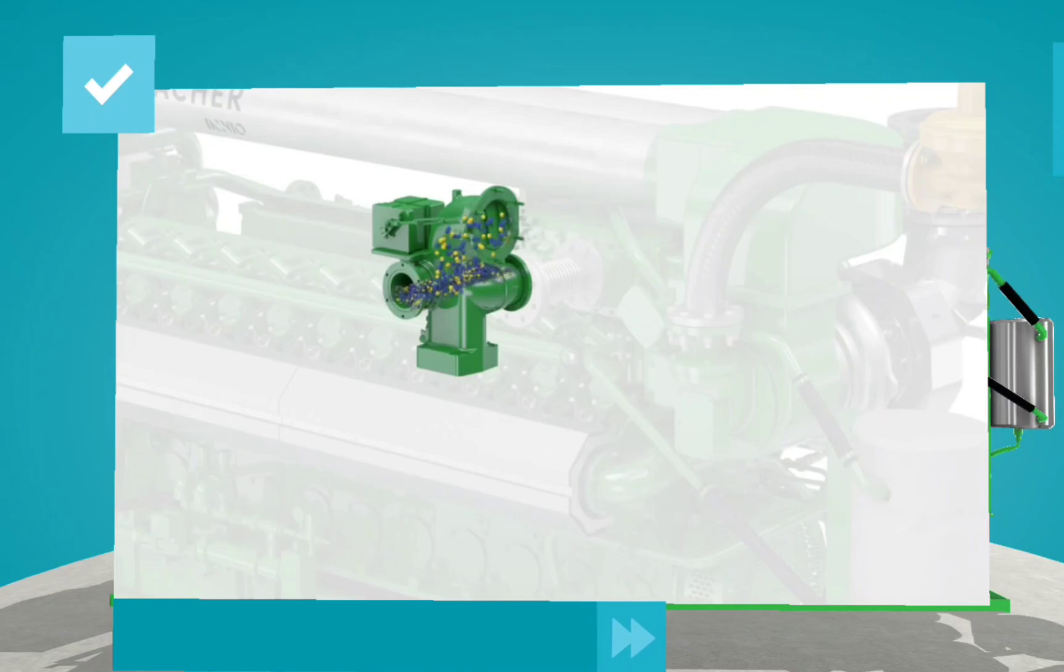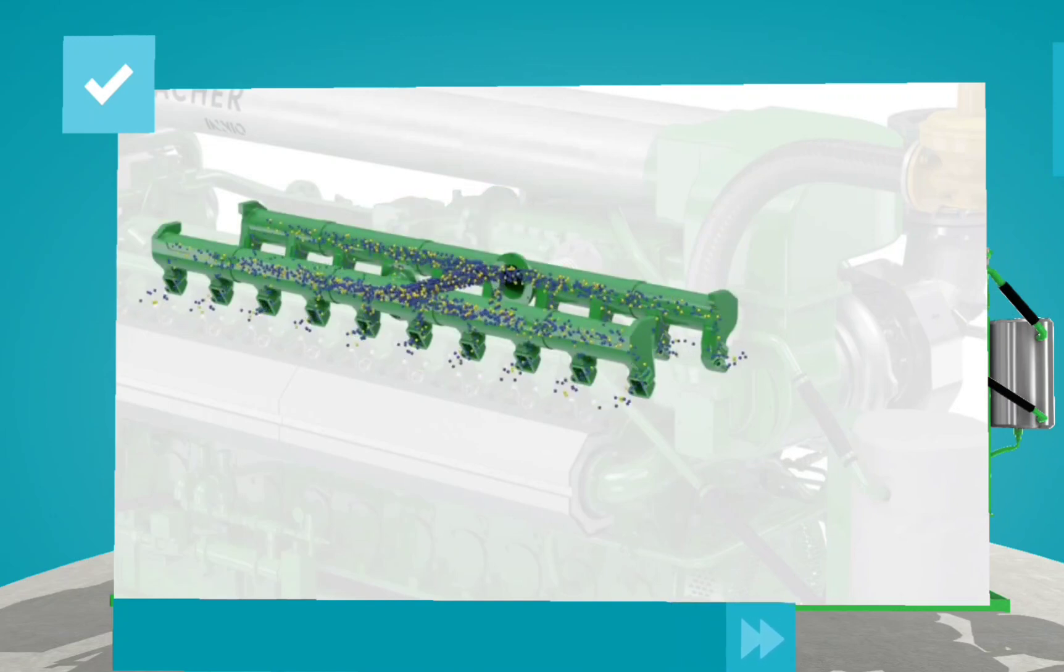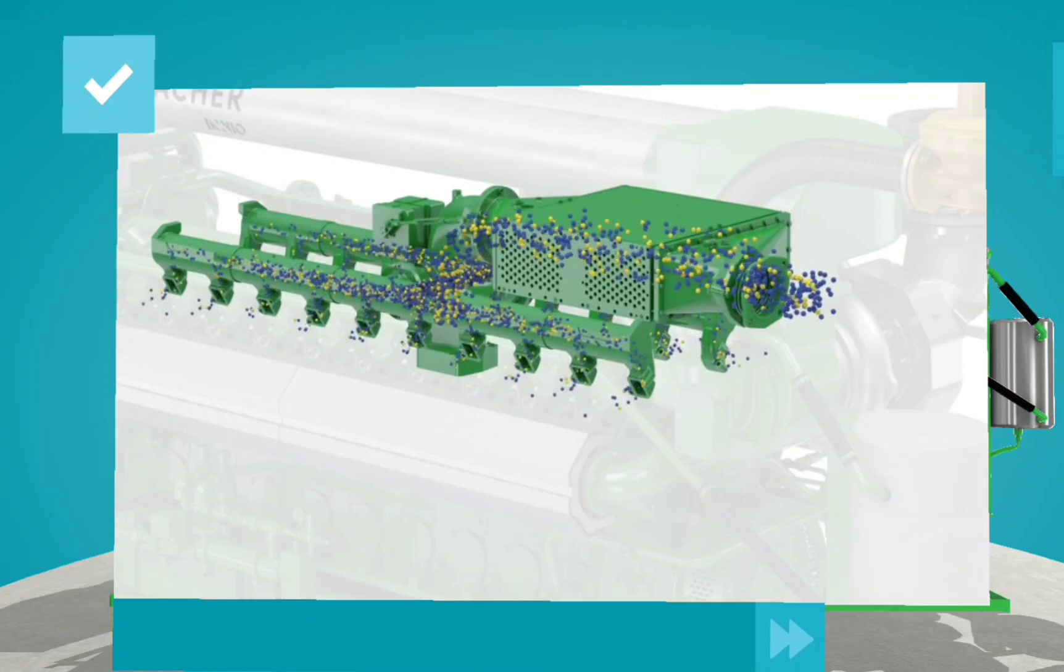It then passes through the throttle valve which, like the accelerator pedal on a car, helps control the amount of mixture entering the inlet manifold and the individual combustion chambers.